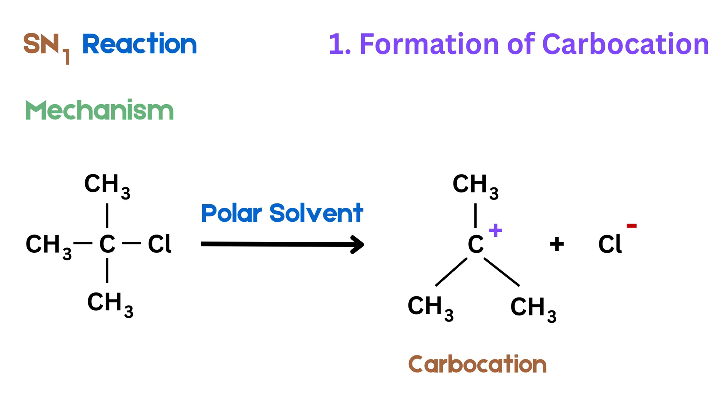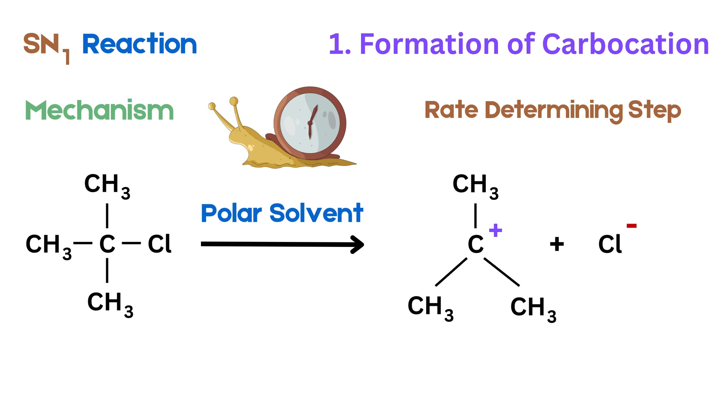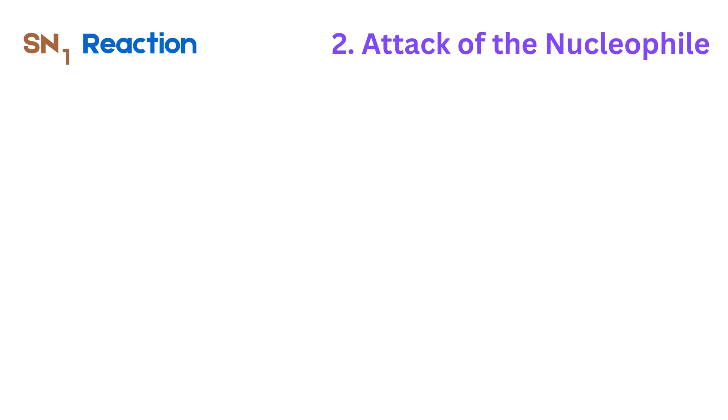This is called a carbocation. This step is slow and therefore it is the rate-determining step. Notice that before breaking, the carbon's bond angles were about 109.5 degrees, or tetrahedral. But once the halogen leaves and a carbocation is formed, the structure becomes planar and the bond angles become around 120 degrees.